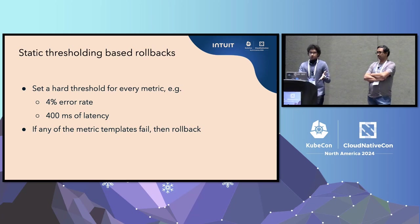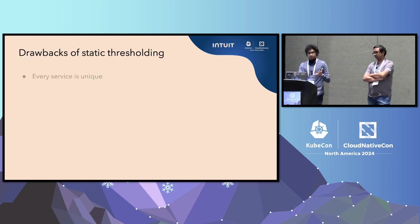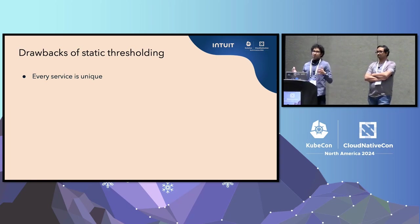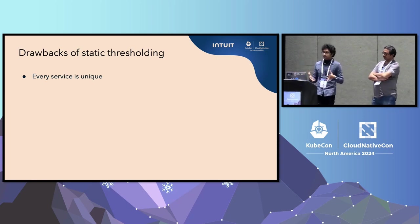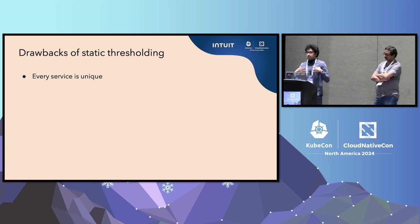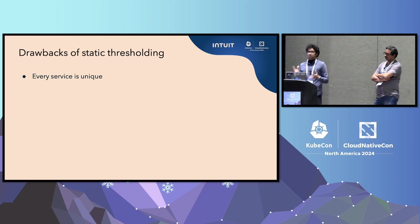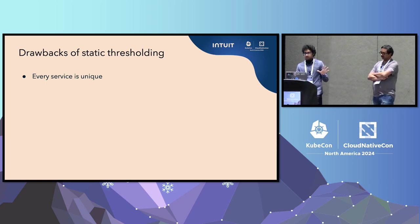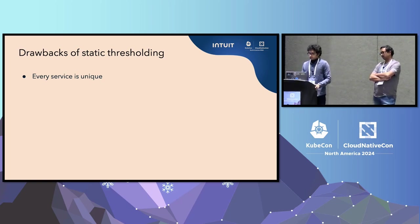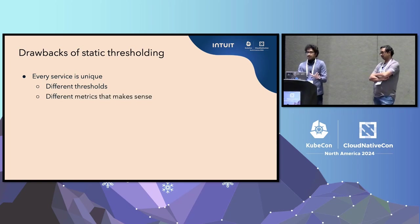Of course, there are some drawbacks. The main drawback is that every service is unique. The metrics and thresholds you have for your service can be completely different from mine. I can have an ML inference service that can tolerate up to one second of latency because it does a lot of number crunching, but you might have a really mission-critical service where even 100 millisecond latency is disastrous. That's why you will have different thresholds and different metrics that make sense for each application.